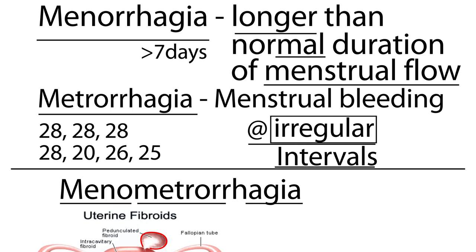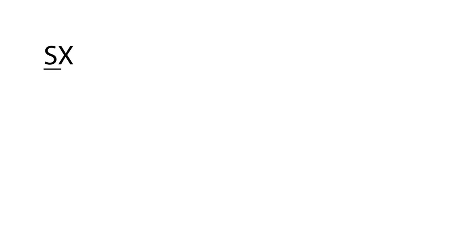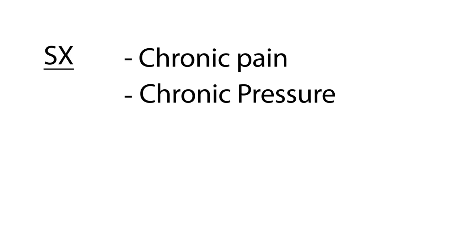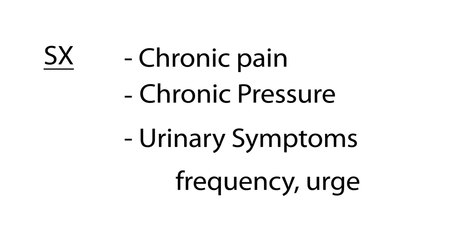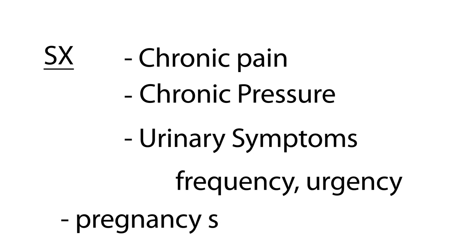Additional symptoms include chronic pelvic pain and pressure. Because the uterus is so close to the bladder, as the uterine fibroids increase in size they can compress on the bladder and cause urinary symptoms such as frequency and urgency — especially if the fibroids are very large. Another thing that can happen is they can interfere with pregnancy and cause spontaneous abortions.